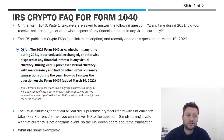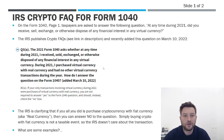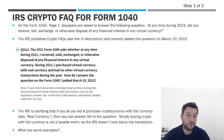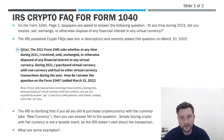So they recently updated their FAQs to add this question — I'll put a link below to the IRS website. It's a number of questions on there, and what they did was they inserted a question 5A. There was already a question 5 for the prior tax year, and they added this one to attempt to offer even more clarification.